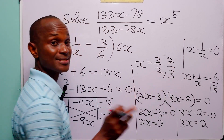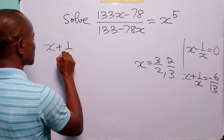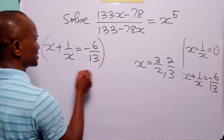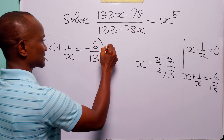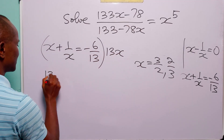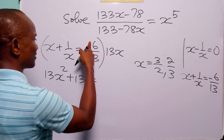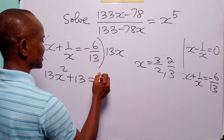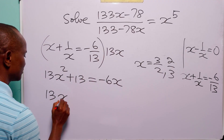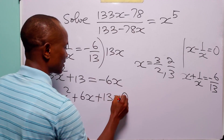In the second equation we have x plus 1 over x equals minus 6 over 13. Let us multiply through by 13x to get rid of the fractions. x times 13x is 13x squared, 1 over x times 13x is 13, and minus 6 over 13 times 13x is minus 6x. When we rearrange, we have 13x squared plus 6x plus 13 equals 0.